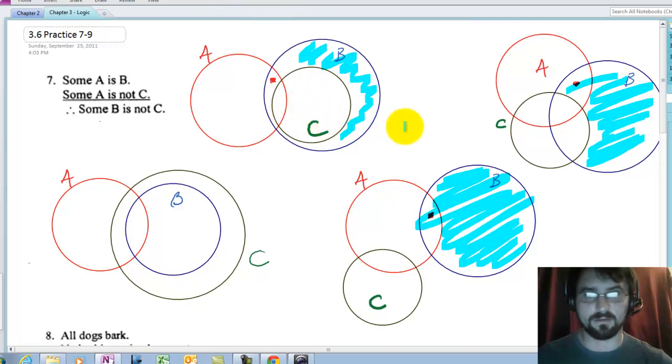We have failed to invalidate the argument in three pictures, and the reason is because this is a picture we should have used. Some A is B. I have that. Some A is not C. Here's an A that's not C.